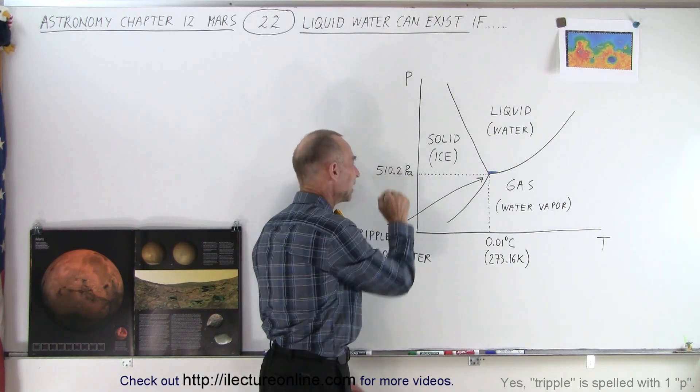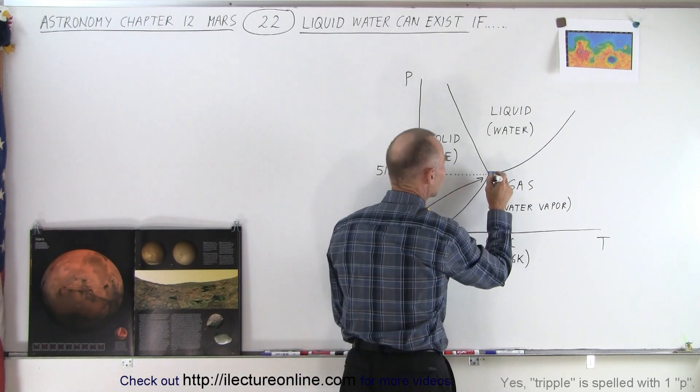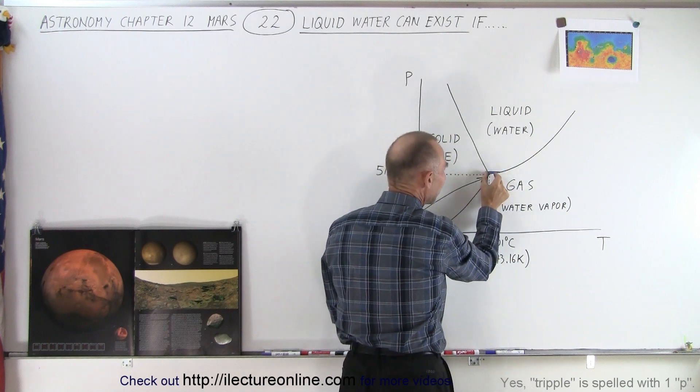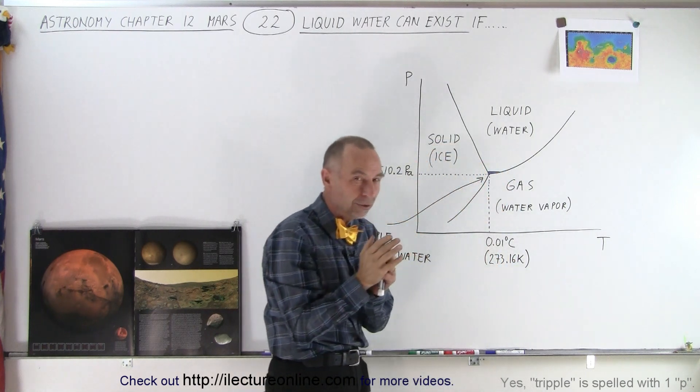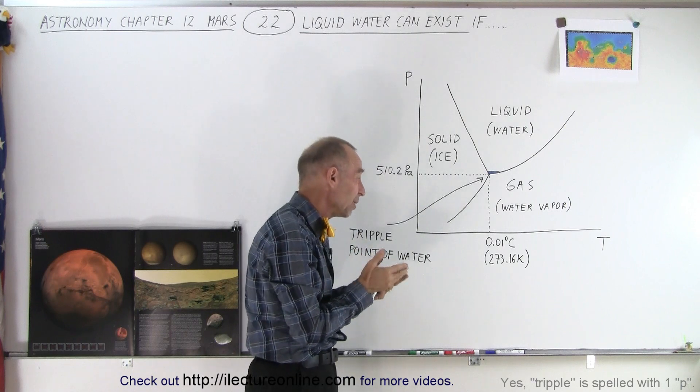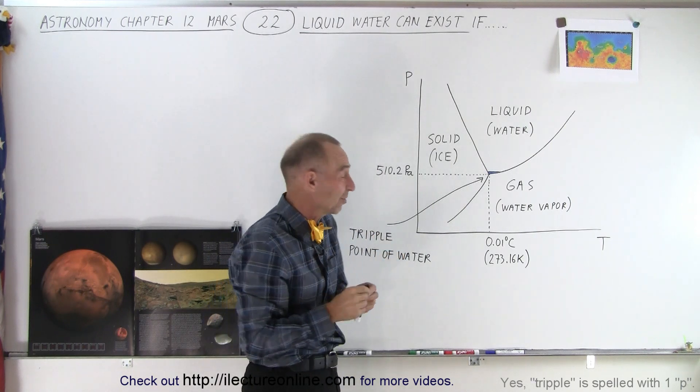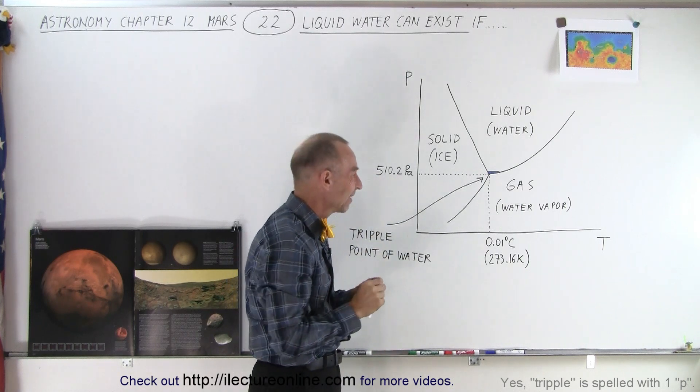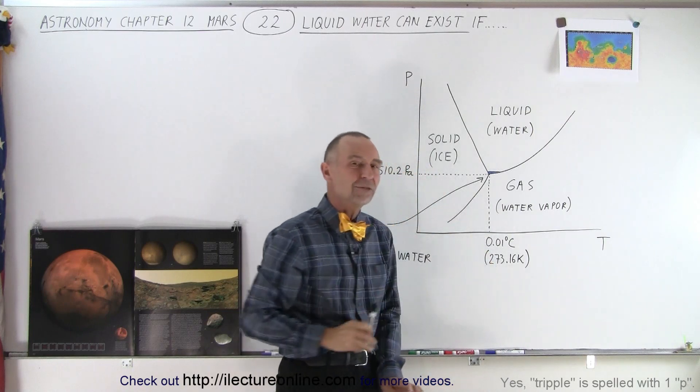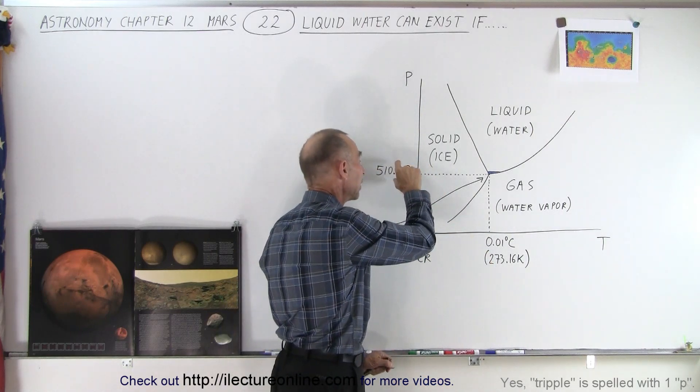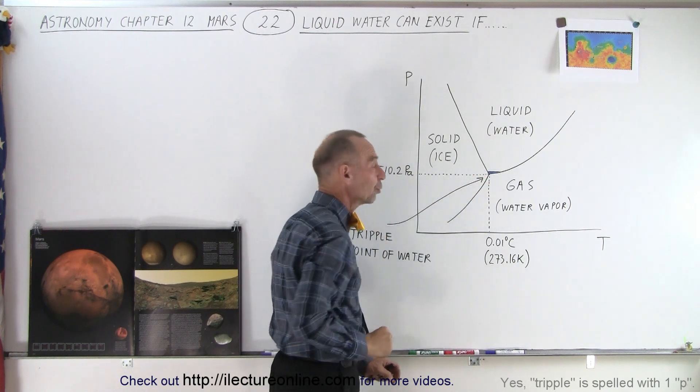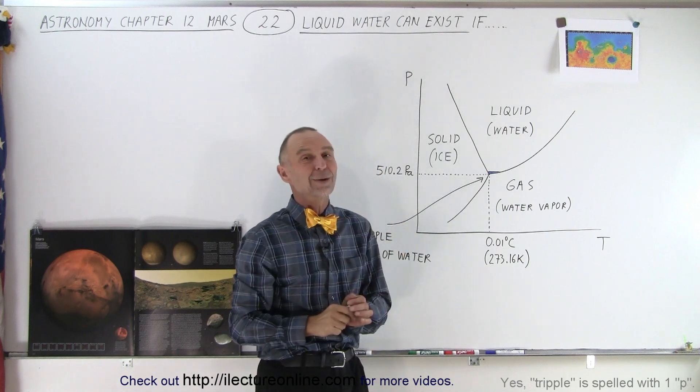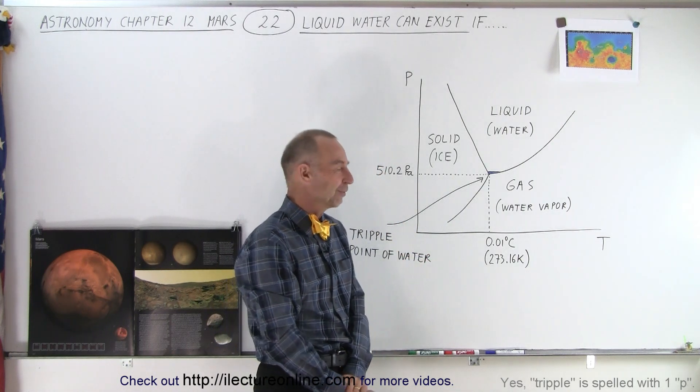So, since the pressure on Mars is slightly greater than that, it creates a small little triangle on this diagram, where for a very narrow range in temperature, slightly above freezing, probably between 0.01 and maybe 0.05 degrees Celsius, yes, water at that temperature could exist. So, if you have a temperature of slightly above the freezing point, and you have the air pressure that is slightly above 510.2 pascals, which indeed on Mars it is, there would be a small window where liquid water could exist on the surface of Mars.